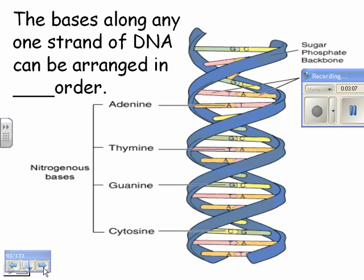The bases along one strand of DNA can be arranged in any order. So it's different between you and me. That's why we look a little bit different. So A, T, C, whatever's here, G, T, A, etc. So this is maybe the order of my DNA.